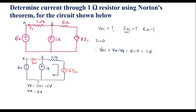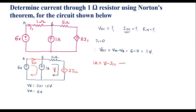We have two loops. Let the current through the first loop be Y, and through the second loop be ISC. I will apply loop analysis to find ISC. The 1 amp current source is common to both loops, forming a super loop. For the current source: Y − ISC = 1 amp. This is equation 1.